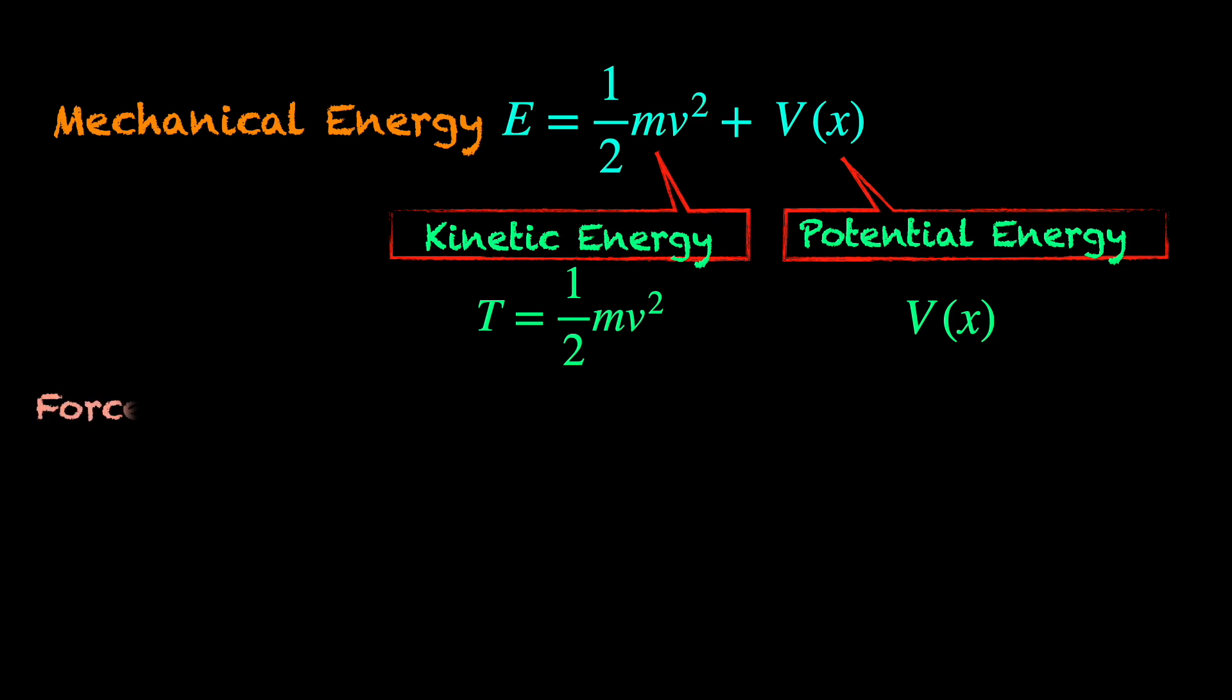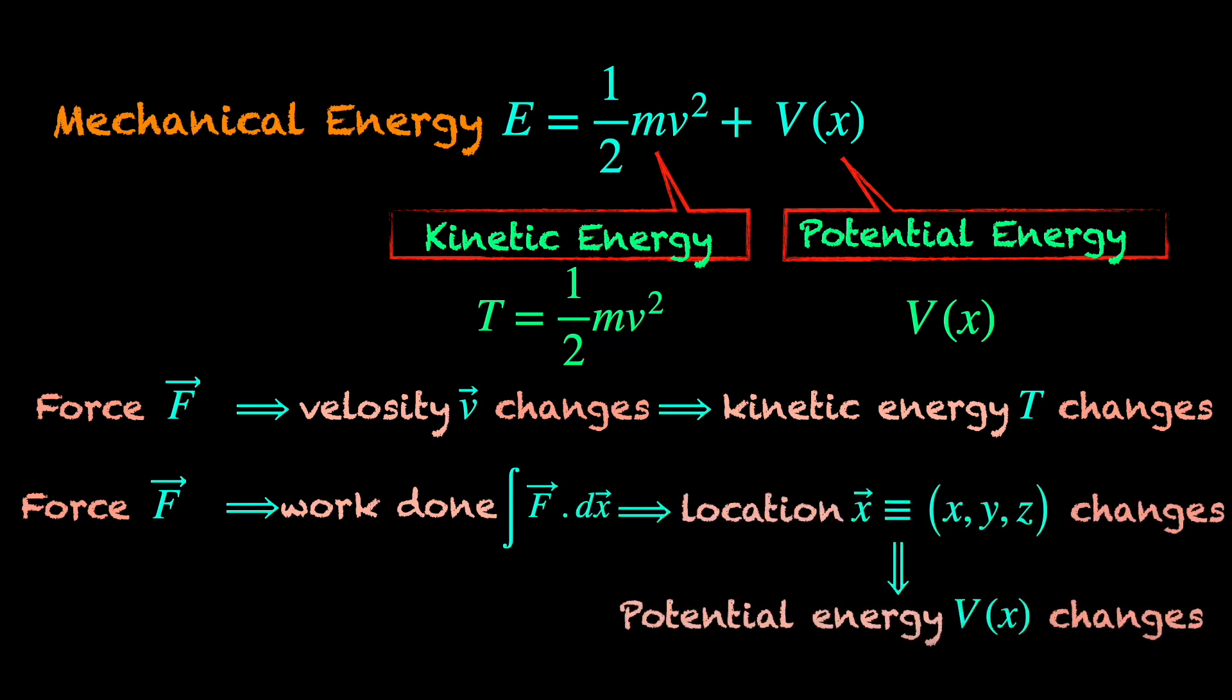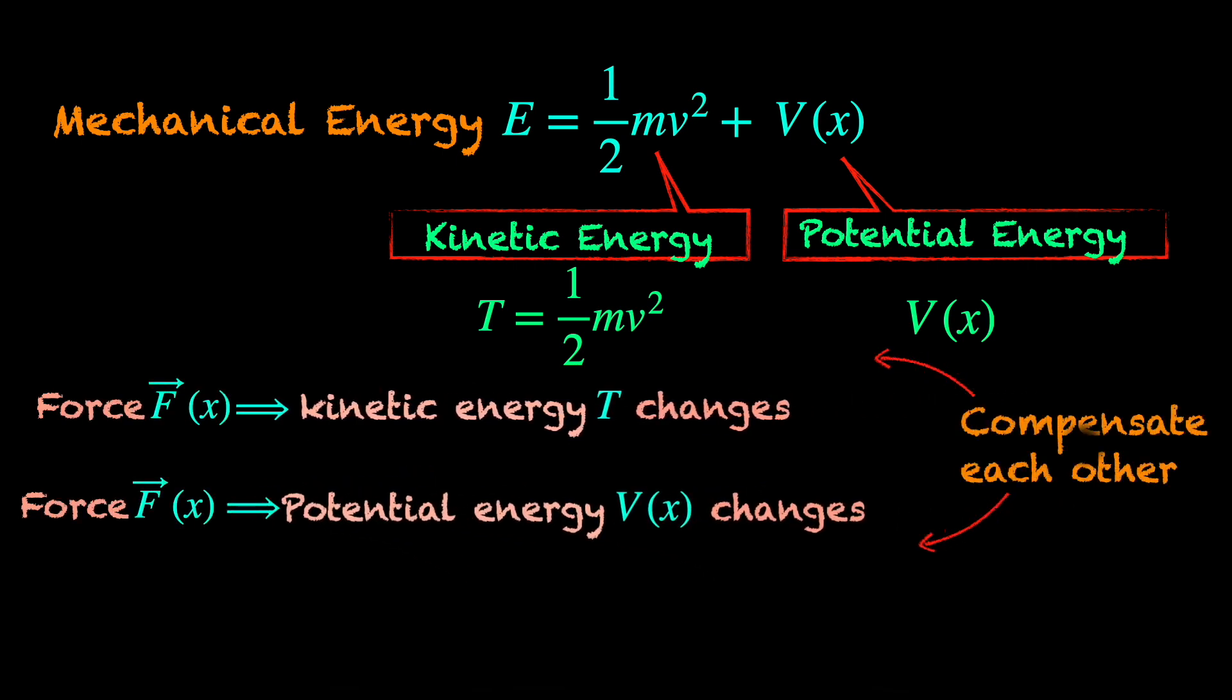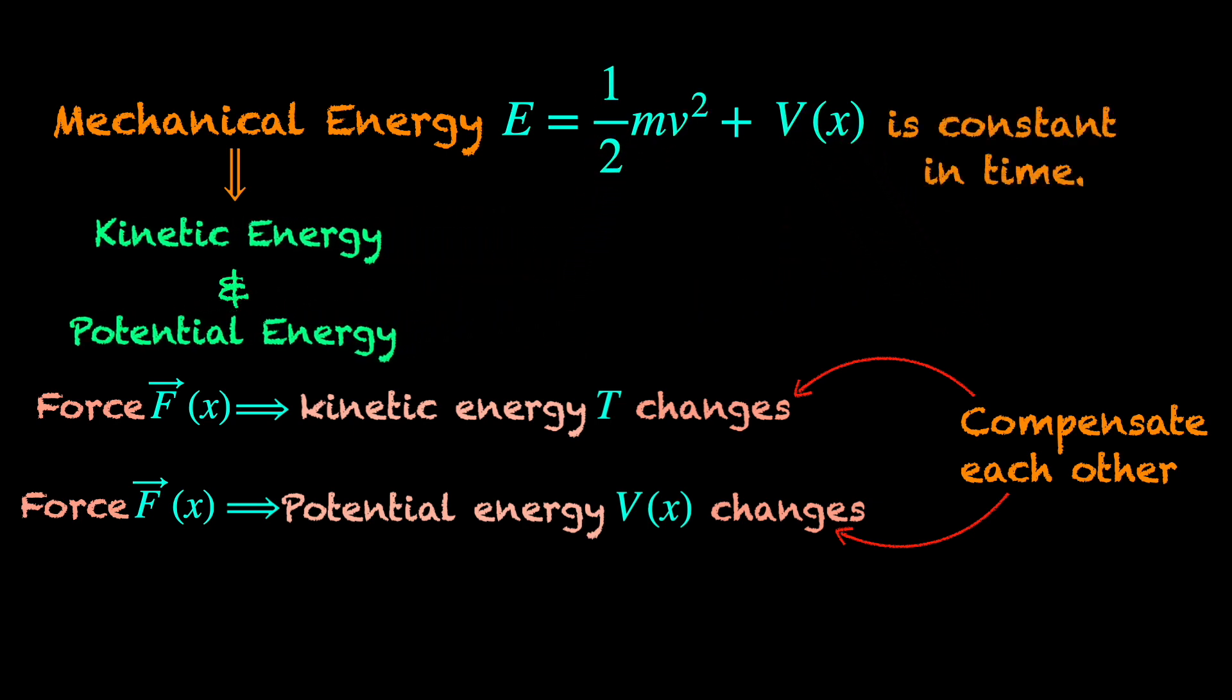To summarize what we have so far: when a force applies to the object, its velocity changes due to acceleration or deceleration, thereby changing its kinetic energy or energy related to its motion. At the same time, the change of location of the object due to the work done by the force or against the force also causes its potential energy to change. If the force happens to be the conservative one, the kinetic and potential energy change to compensate each other such that their sum total remains constant in time.